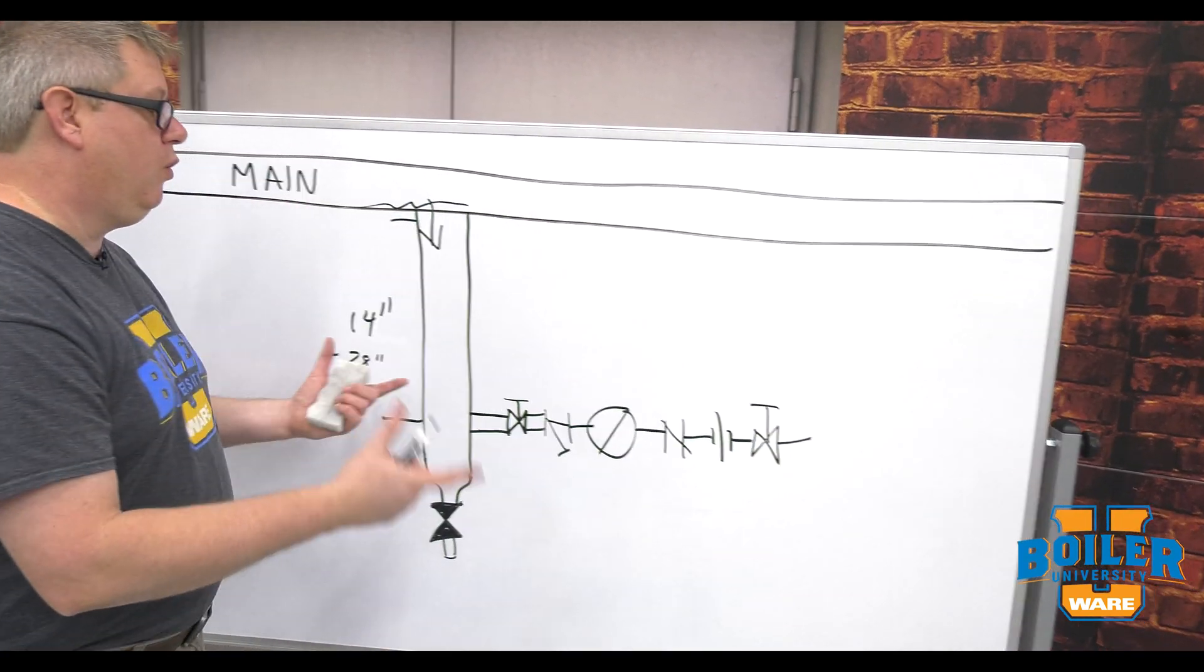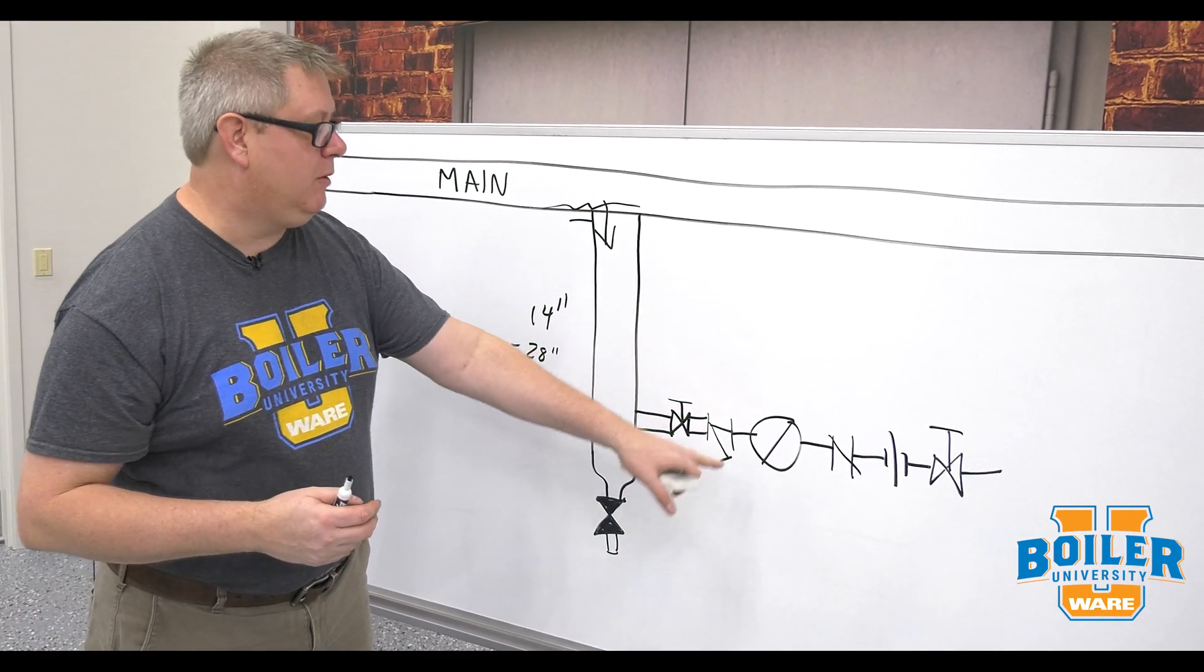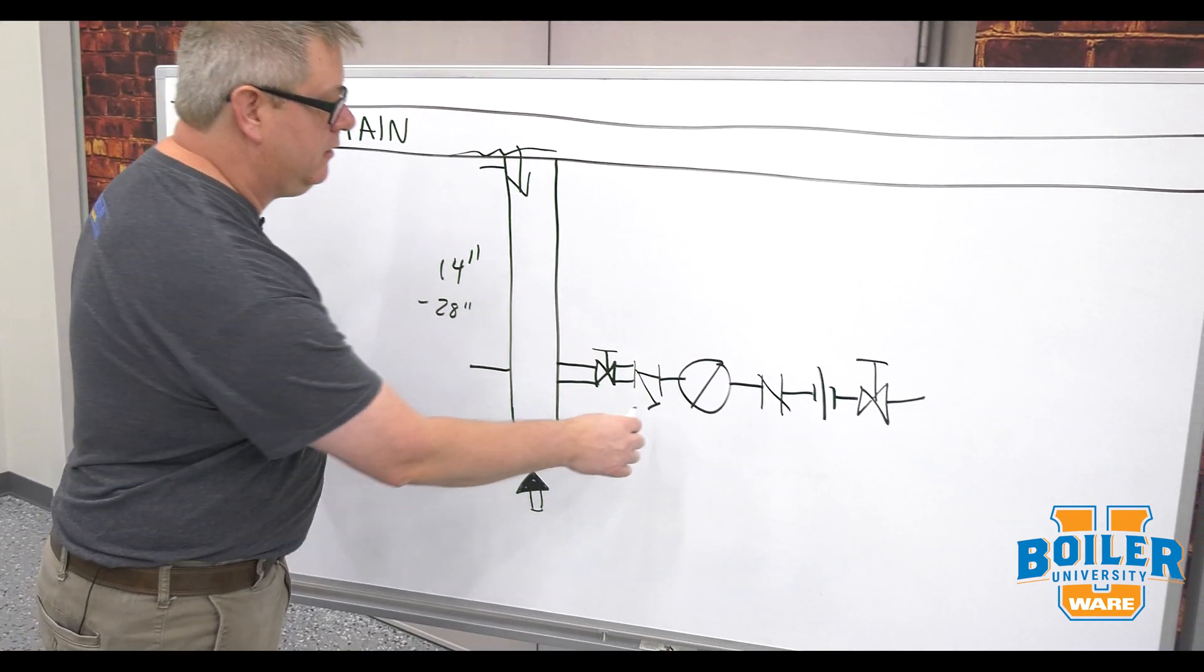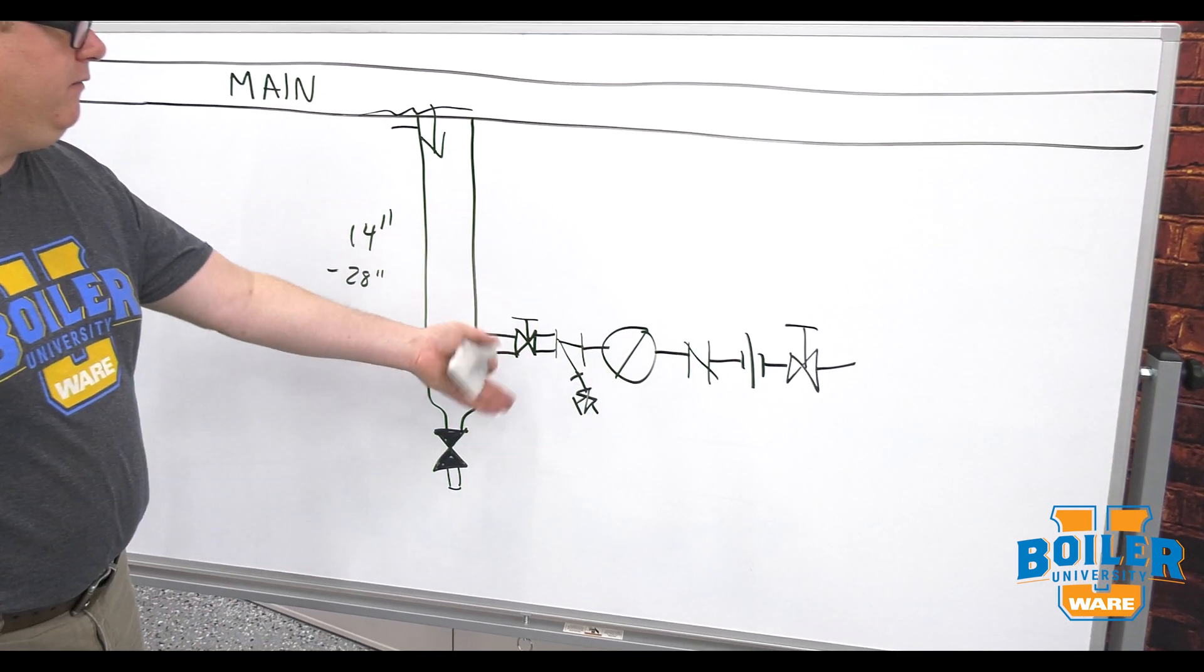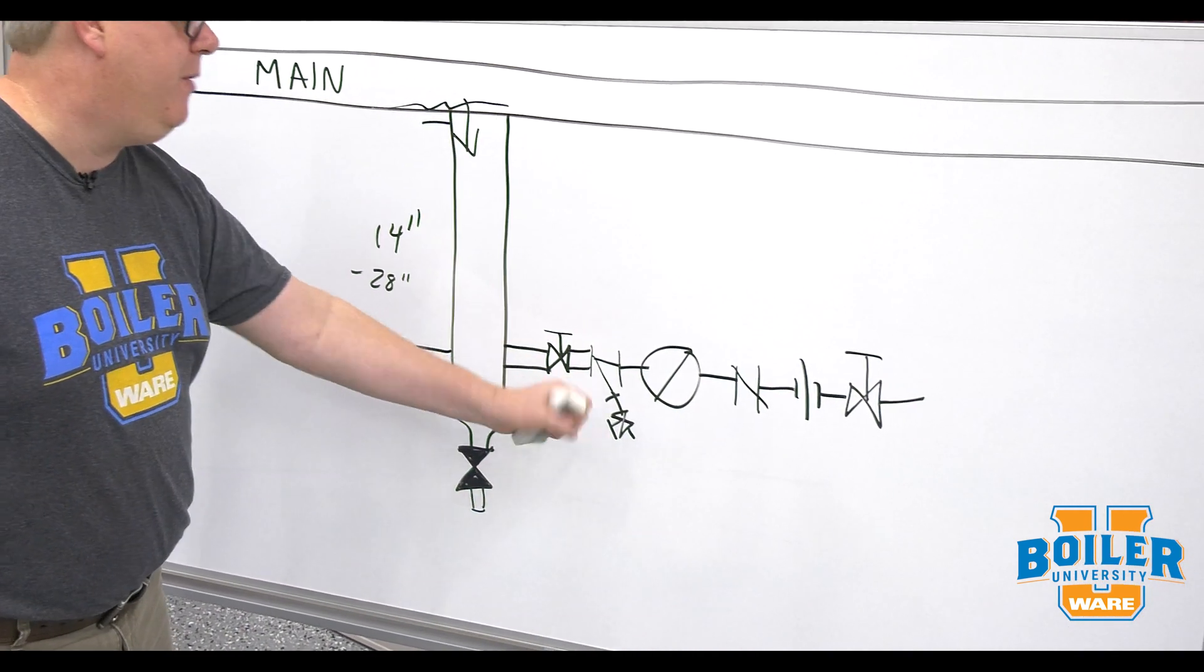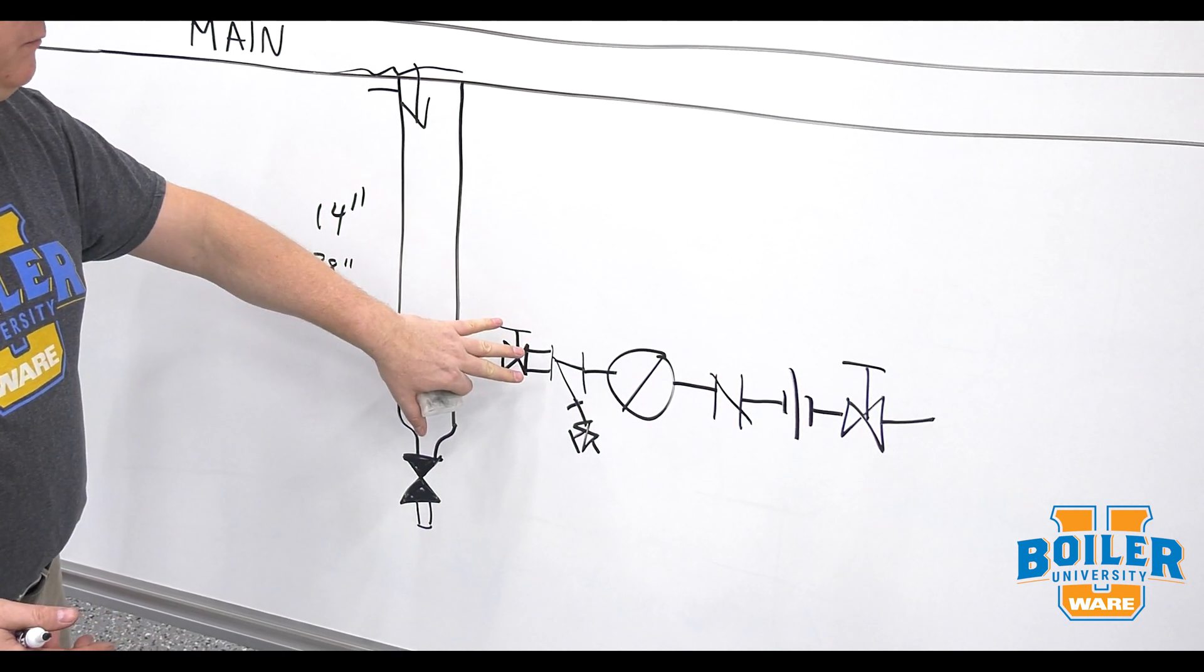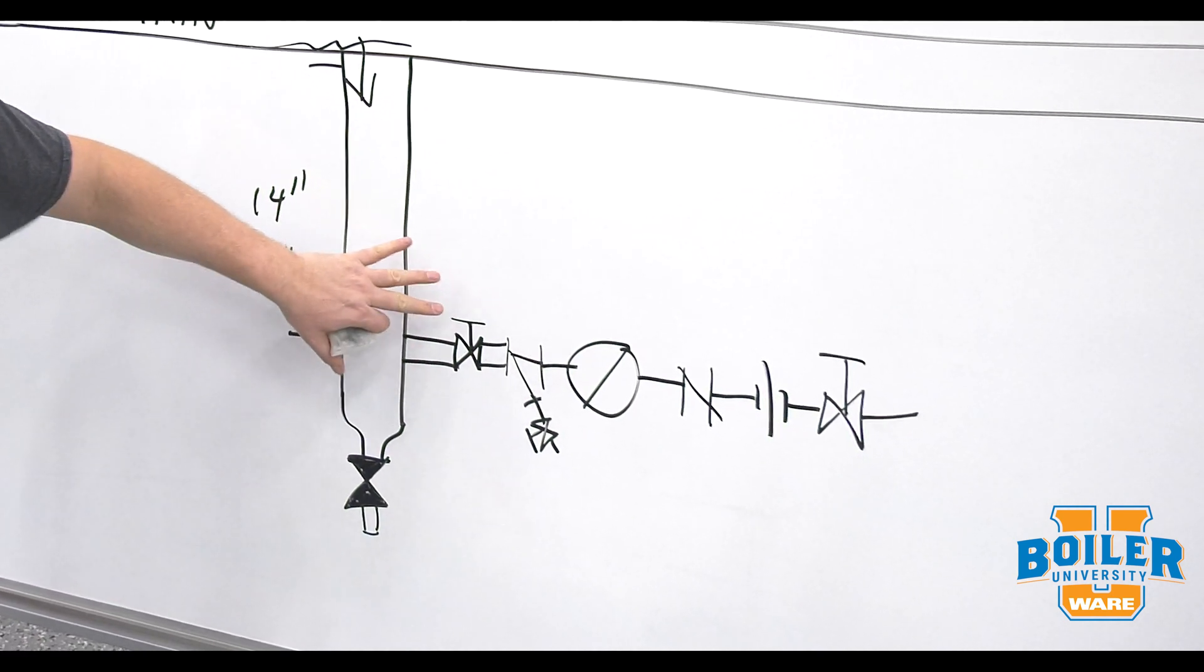Now every plant's got different rules. We may not be able to blow down this strainer trusting that that valve works by removing the plug so it's not a bad idea to put a valve on the outlet of the strainer. That way we can open that valve and not have to worry about this valve holding completely. We can verify that it is if needed.